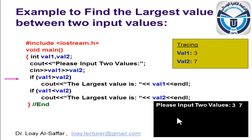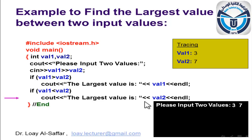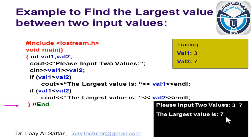If val one is greater than val two, then the statement following it will be executed. In this case, the condition is false because three is not greater than seven, so the following statement will not be executed. We go to the second if statement and check if val one is less than val two. In this case the condition is true, so the statement following the if will be executed — an output statement that prints the largest value is val two, which is seven. Then the program ends.